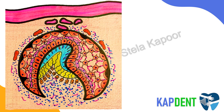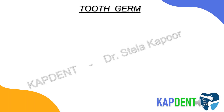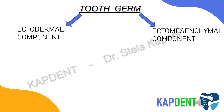On the inside of the depression of the enamel organ, the ectomesenchymal cells increase in number and become dense — this represents the dental papilla. Surrounding the combined enamel organ and dental papilla, the third part of the tooth germ forms: the dental sac or follicle, which consists of ectomesenchymal cells along with some fibers. Therefore, the tooth germ consists of an ectodermal component and an ectomesenchymal component.